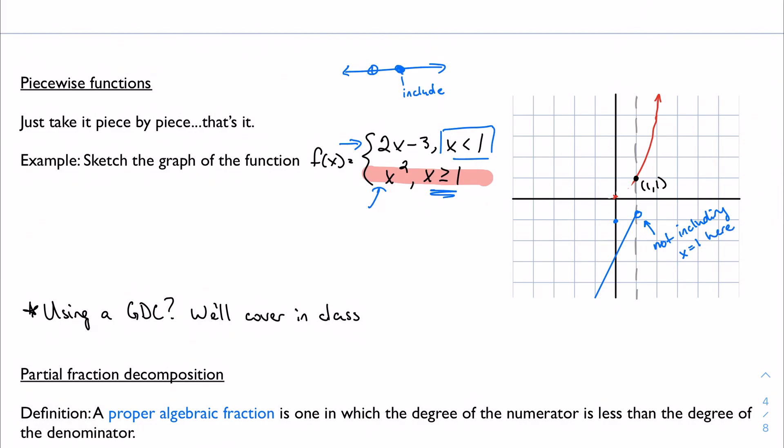So, then my function, my blue piece is going to get an open circle at one. And I guess that's not really exactly accurate, but it's close enough for now. Because I'm not including x equal to one here. I'm including x equal to one here. So, it gets a closed circle. Because I want to use it here. x equals one would fall under the second case. And so, it gets a closed circle there.